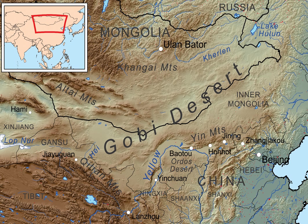The desert basins of the Gobi are bounded by the Altai Mountains and the grasslands and steppes of Mongolia on the north, by the Taklamakan Desert to the west, by the Hexi Corridor and Tibetan Plateau to the southwest, and by the North China Plain to the southeast.